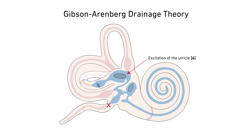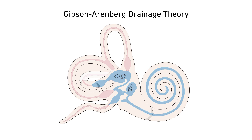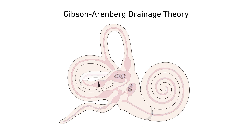It is now known that stimulation of the utricle alone can cause vertigo with nystagmus. Therefore, the nystagmus seen during a Meniere's attack could be due to a combined stimulation of the utricle and the horizontal canal receptor. If the endolymphatic duct obstruction is overcome, the sac may eventually clear the hydrops. Changing direction of nystagmus is likely due to endolymph moving in one direction and then in the opposite direction.